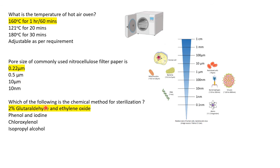Next: which of the following is a chemical method for sterilization? Options are phenol and iodine, chloroxylenol, isopropyl alcohol, 2% glutaraldehyde, and ethylene oxide. The correct options are 2% glutaraldehyde and ethylene oxide, which are chemical methods for sterilization.